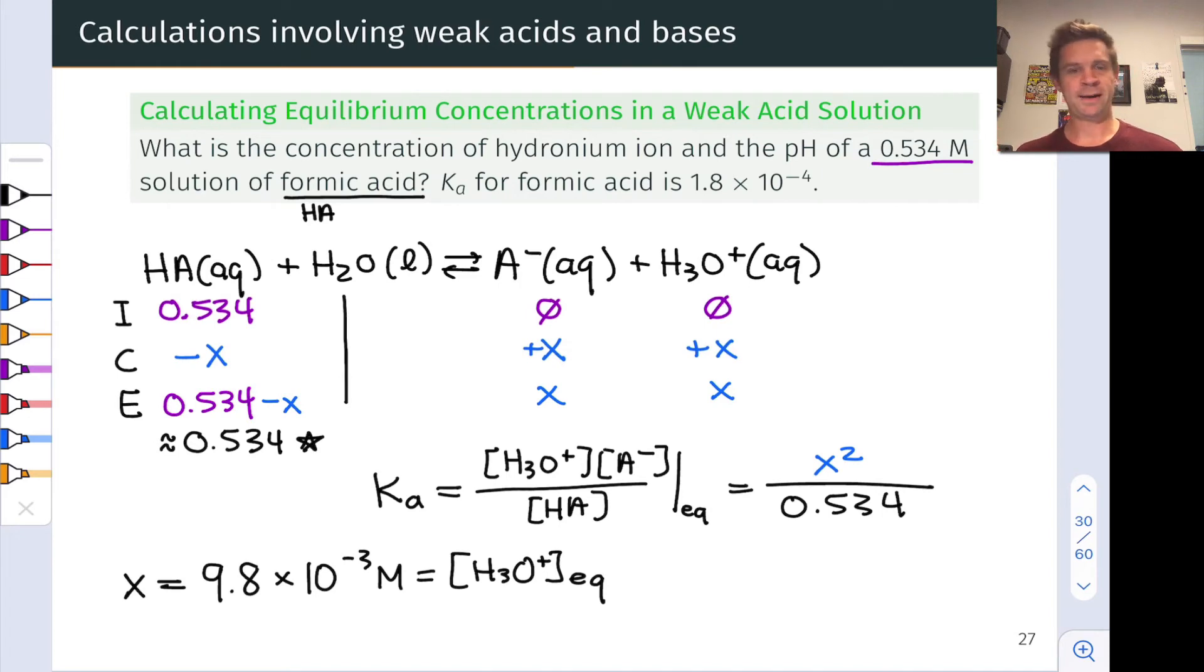We plug and chug, do the math, solve for X: 9.8 times 10 to the negative 3 is the value of X, which is the equilibrium molarity of H3O plus. To find the pH, we take the negative base 10 logarithm of that value and arrive at 2.01 for the equilibrium pH.